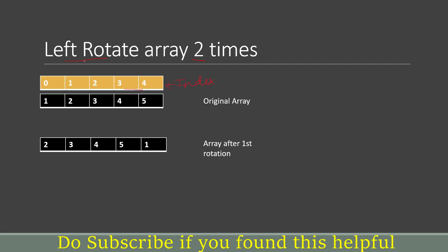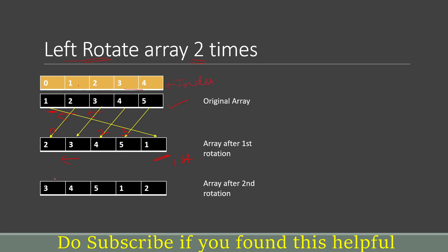We have to rotate the array two times. Here we have our original array. Let us see what will happen when we rotate this array for the first time. Each element shifts one position towards the left. The two which was at index one will come to index zero, similarly three will be at one, four at two, five at three. The element that was at index zero - the one - will go to the end of the array. This will be the result after the first rotation.